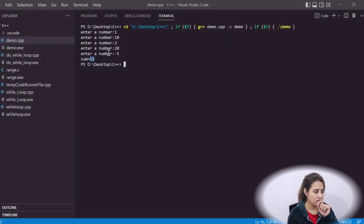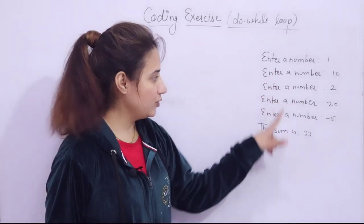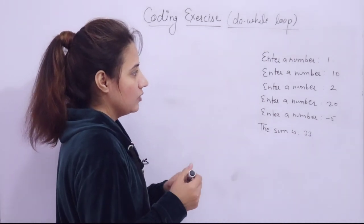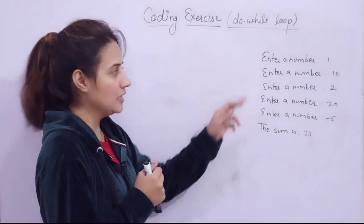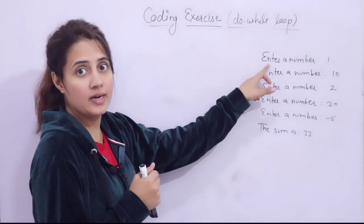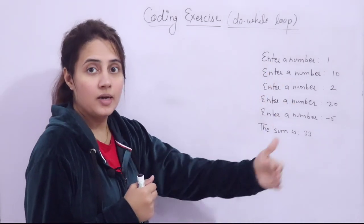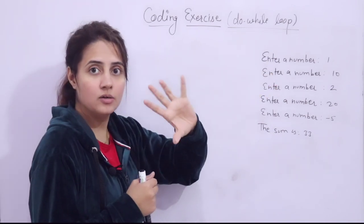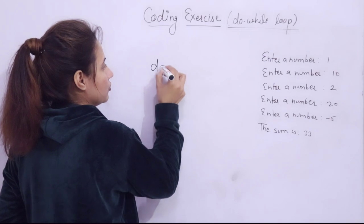Pause the video and write down the logic for this before seeing the solution. Now, how can you write this? First, think through the logic. This statement — 'enter a number' — is executing again and again, so it is asking the user repeatedly. You have to put this statement in a loop, and we'll write it with the help of a do-while loop.